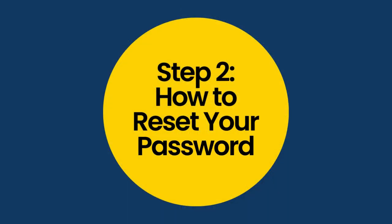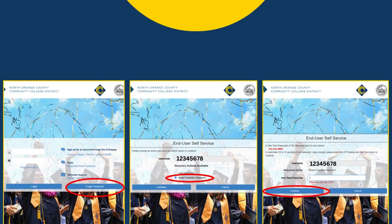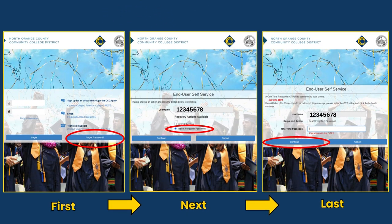Step 2: How to reset your password. To reset your password, select Forgot Password, then type in your Banner ID, select Reset Forgotten Password, and click Continue. Next, input the one-time passcode that was sent to you either through text or your personal email that you applied to the college with. After inputting the one-time passcode, click Continue and it will take you to a page to create a new password. Make sure to write this password down for future use.